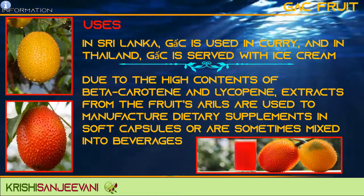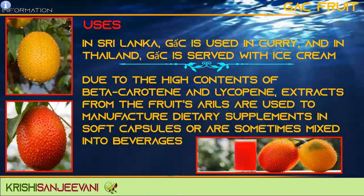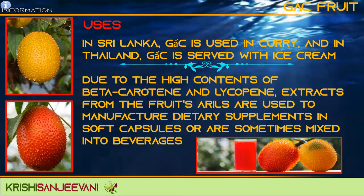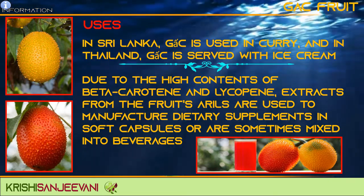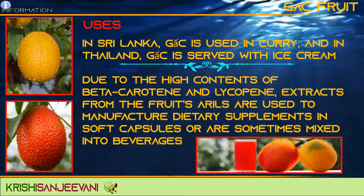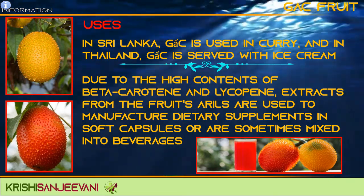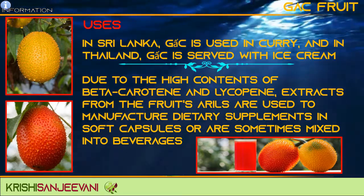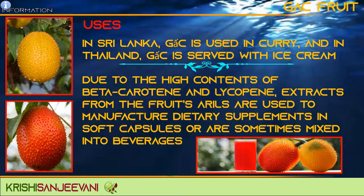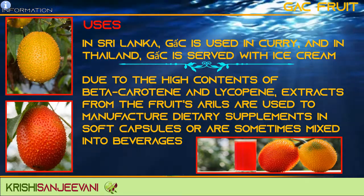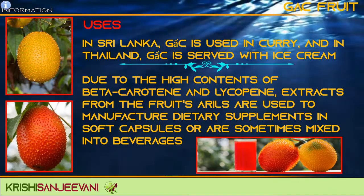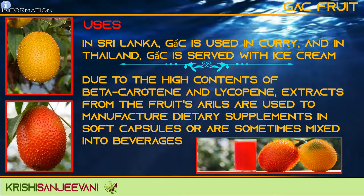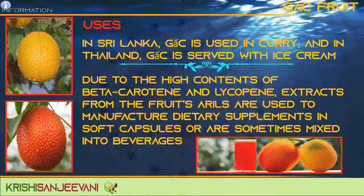In Sri Lanka, Gac is used in curry, and in Thailand, Gac is served with ice cream. Due to the high content of beta-carotene and lycopene, extracts from the fruit's arils are used to manufacture dietary supplements in soft capsules or are sometimes mixed into beverages.